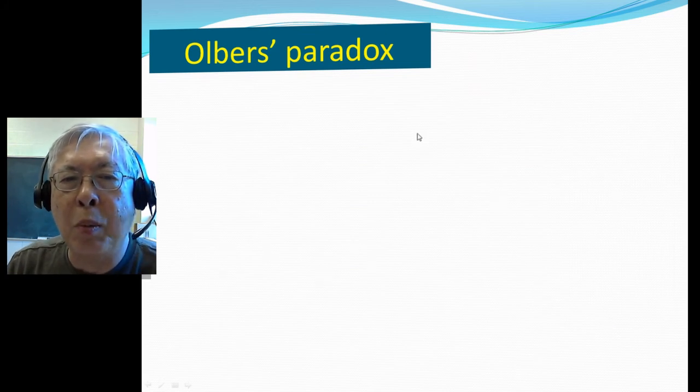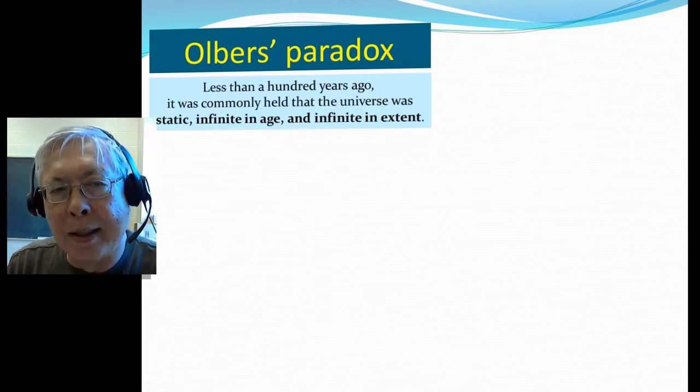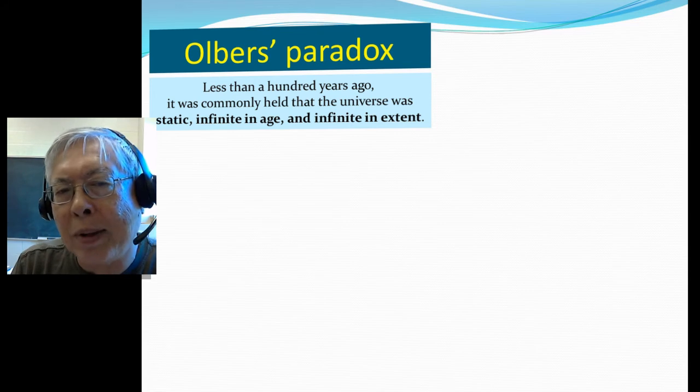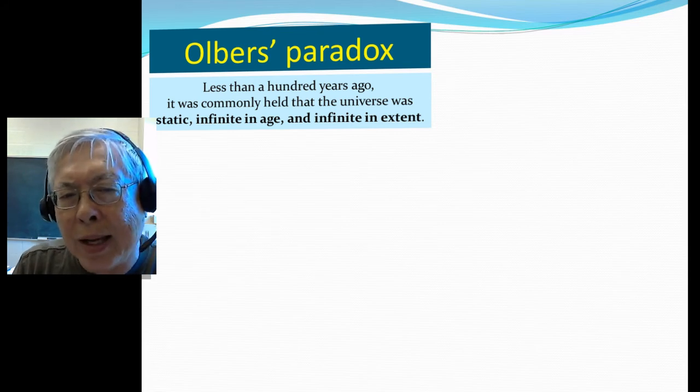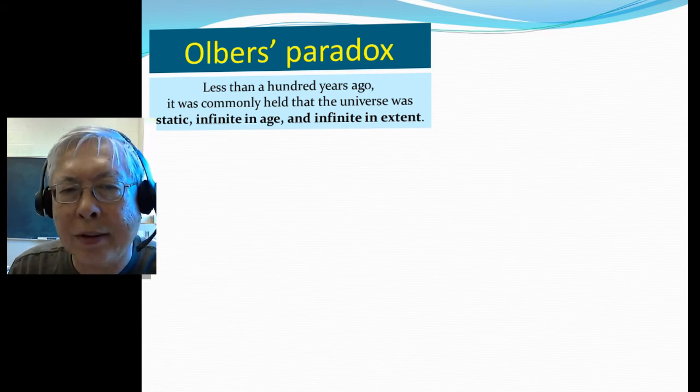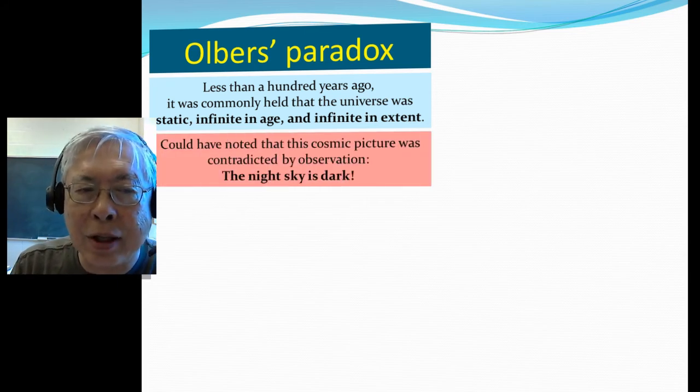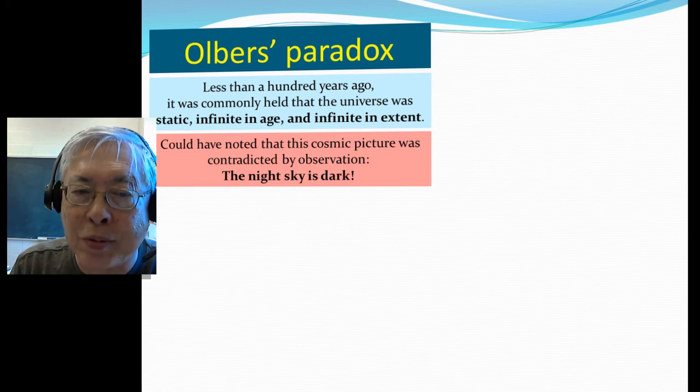First, we're going to talk about something called Olbers' Paradox. Because less than 100 years ago, it was commonly held that the universe was static, infinite in age, and infinite in extent. That's, you know, everyone believed. And but actually, Olbers already pointed out that this cosmic picture was contradicted by observation. What's observation? The night sky is dark.